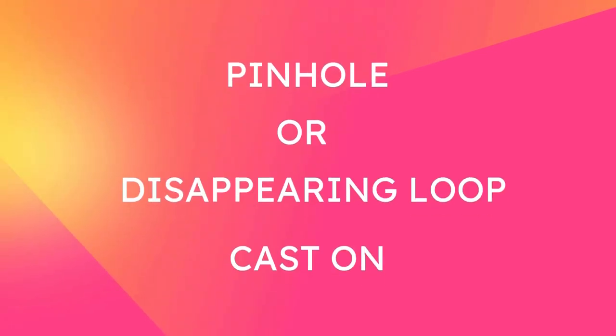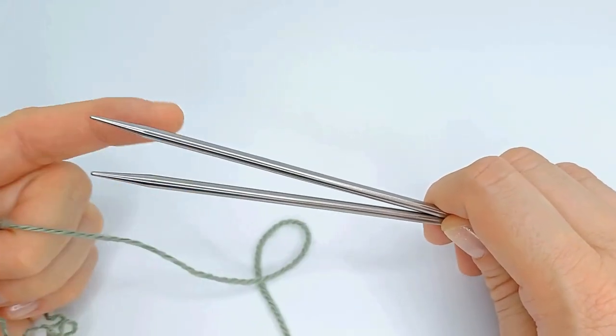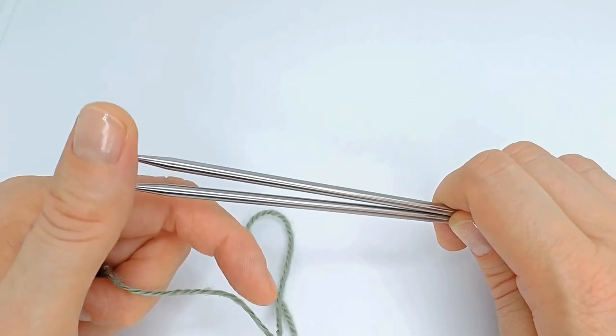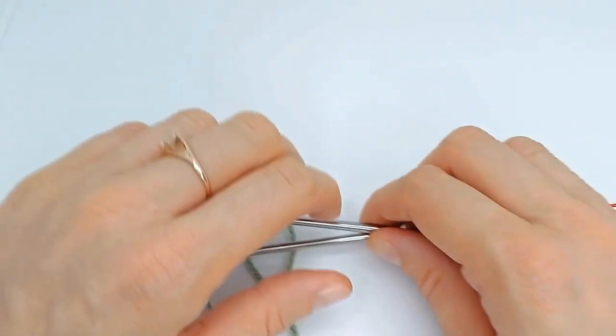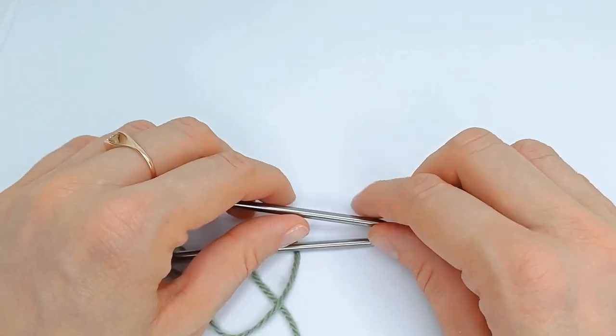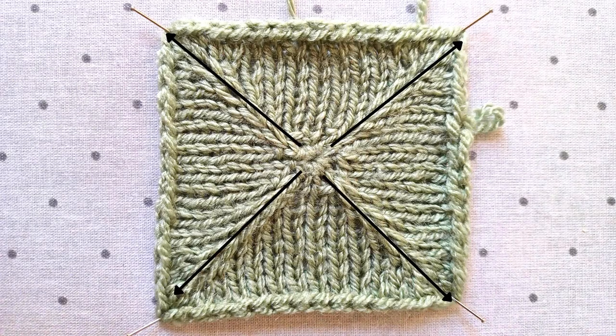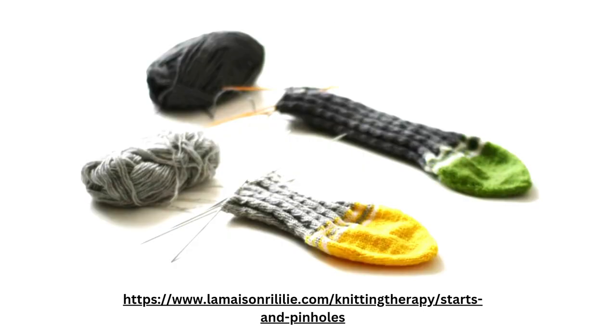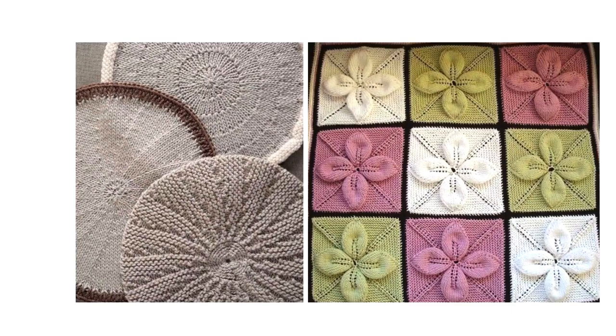This little cast on we use every time when we need to knit something from the center with rapid increases moving outwards. Could be a hat, could be toe up sock for example, could be motifs for blankets.